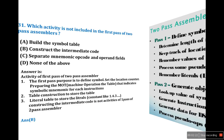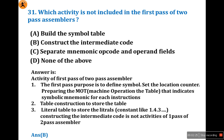Now look at question 31: which activity is not included in the first pass of a two-pass assembler? The answer is definitely B. In first pass, option A — build the symbol table — is a first pass characteristic. And option — separate mnemonics, opcodes, and operands fields — is also a characteristic of first pass. So the answer is B: construct the intermediate code. Constructing the intermediate code is done in the second pass, not the first pass. I hope you understood this question.